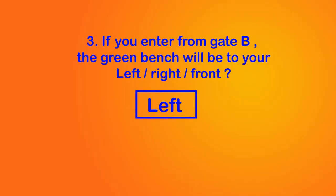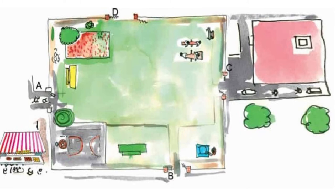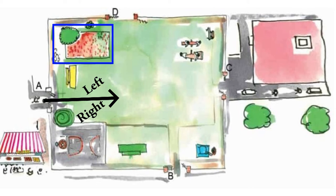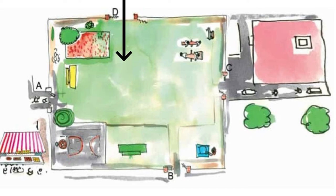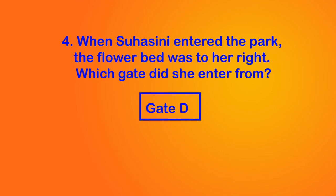Now let's go to the next question. When Suhasini entered the park, the flower bed was to her right — which gate did she enter from? Suppose Suhasini entered from gate A: this will be her left and this will be her right, which means the flower bed is to her left. So the flower bed will be to her right if she enters from gate D. Therefore, Suhasini had entered the park through gate D.